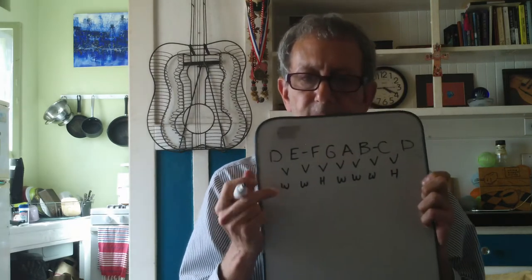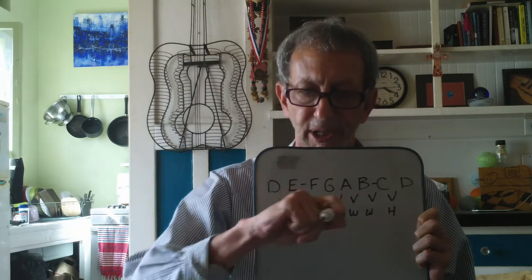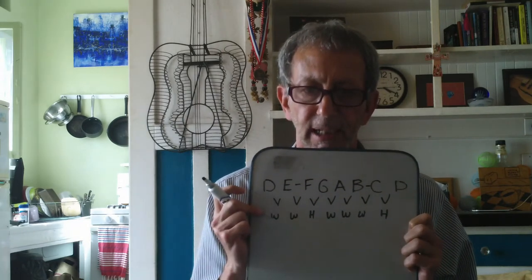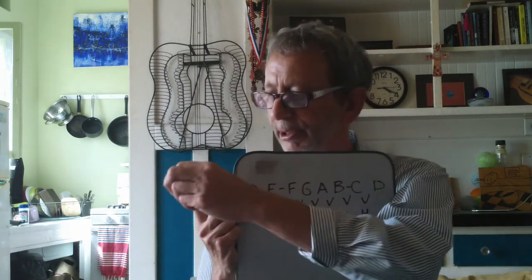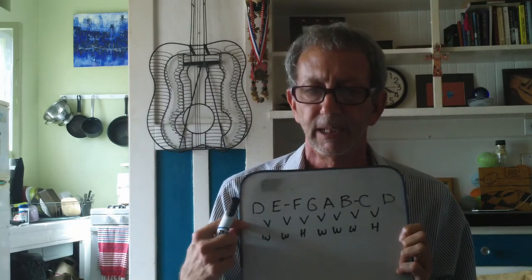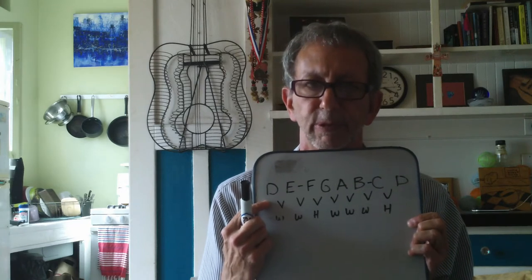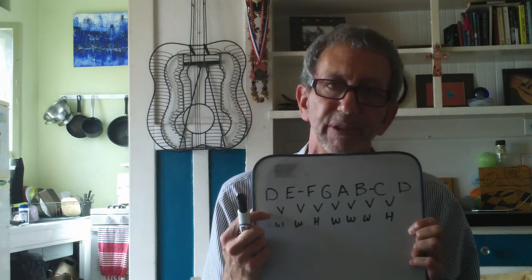I'm going to do that right now. We have W, W, H, W, W, W, H. Notice the hyphens between E and F and B and C — those came from the key of C, and that situation is going to change as we build the key of D. Now, between D and E, that naturally occurs as a whole step. So actually, what we're doing right now: we did the second step, which is to write the whole-step, half-step formula underneath. Now we're already on the third step and we're about to find the notes of the key of D.